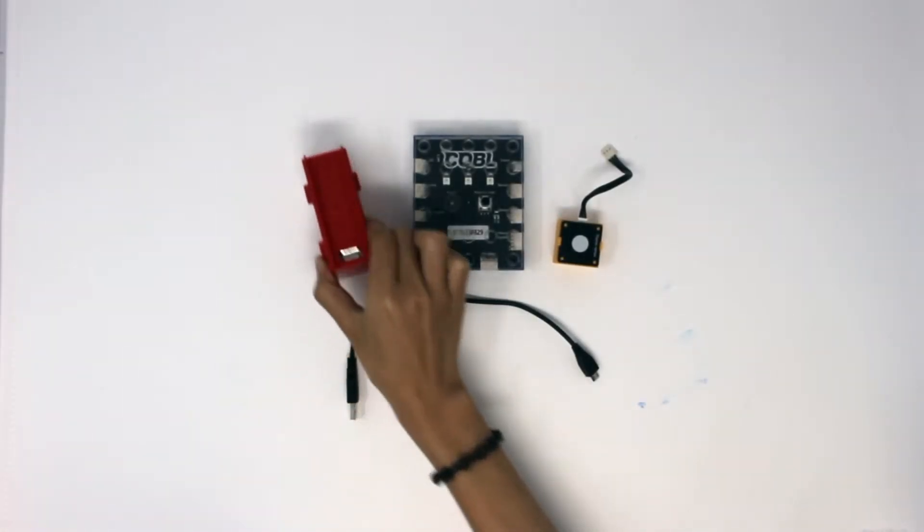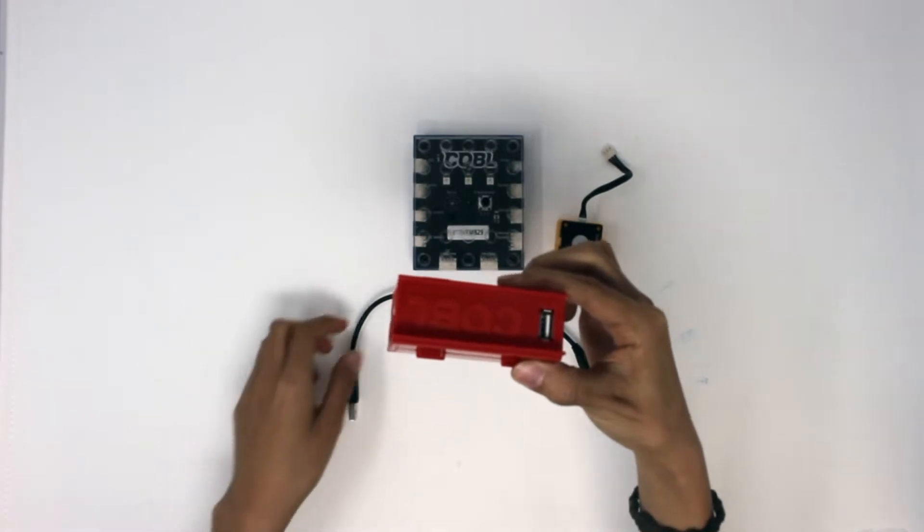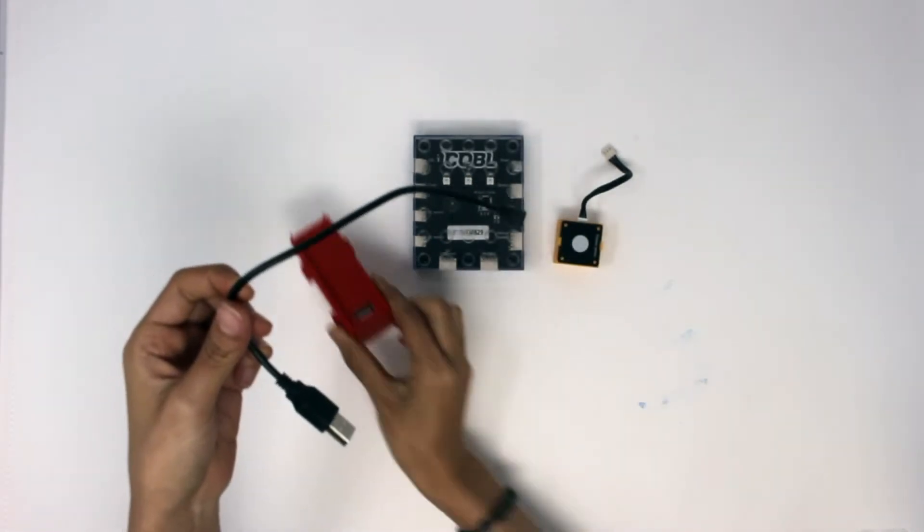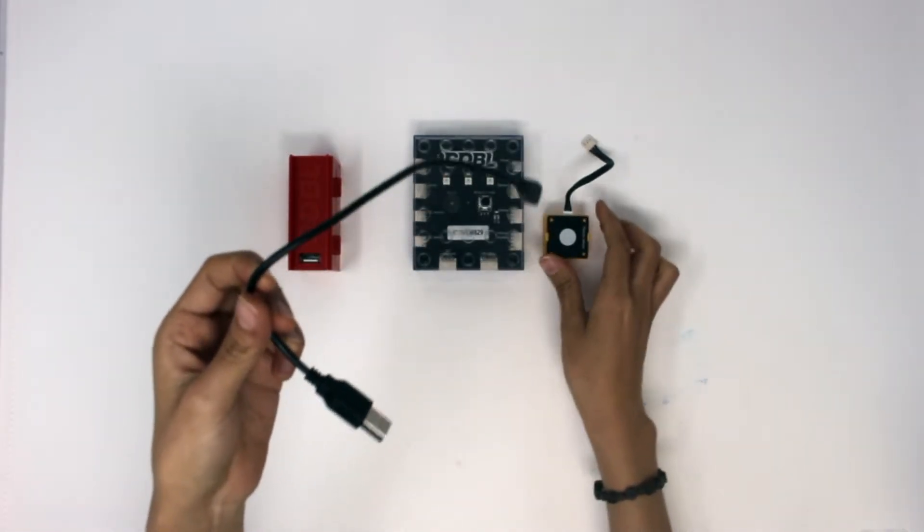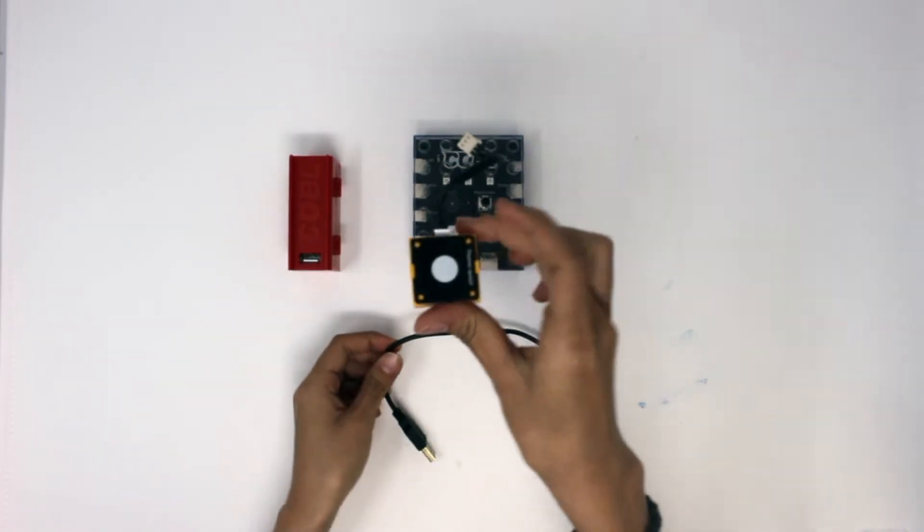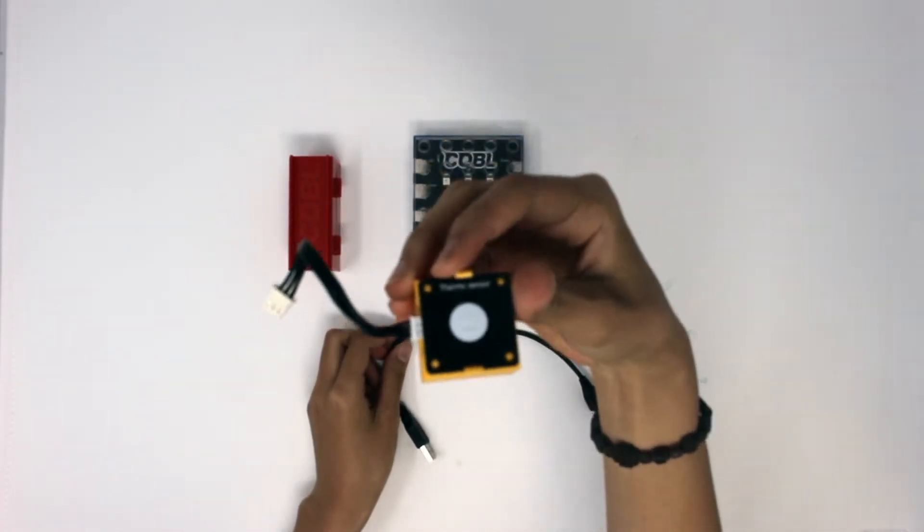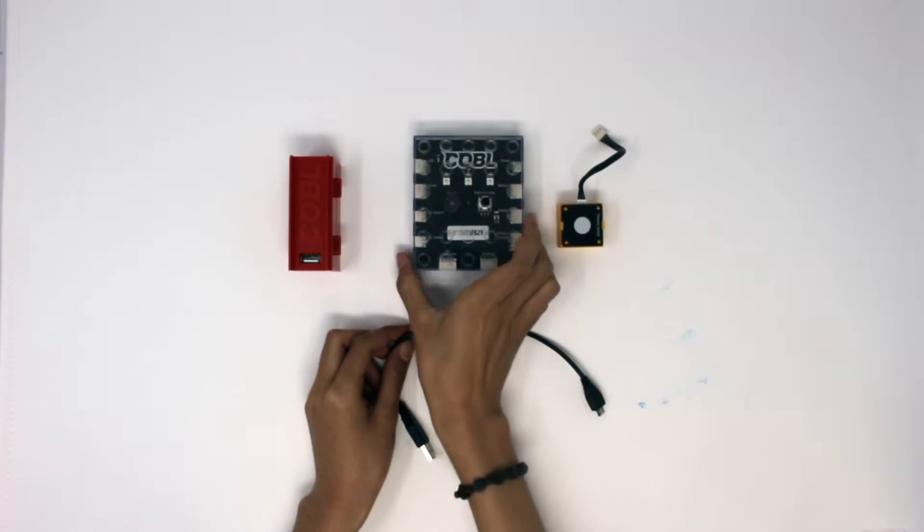In order to build a fire alarm, you will need a power bank, a USB cable, a thermosensor block, and finally a cobalt CPU.